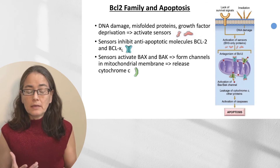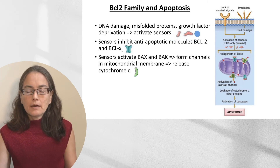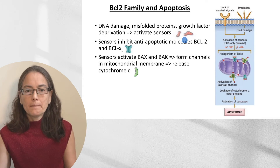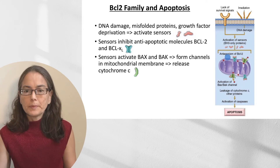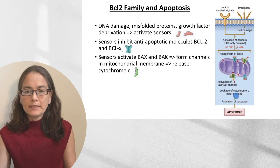If things go awry — no survival signals in an involuting breast, or significant radiation causing DNA damage — these activate the sensors, the BH3-only proteins. The sensors bind to BCL2, and also activate BAX and BAK, which oligomerize to form a pore in the mitochondrial membrane. Cytochrome C and other pro-apoptotic proteins leak into the cytosol, then along with cofactors activate caspase 9, starting a cascade of downstream caspase activation.